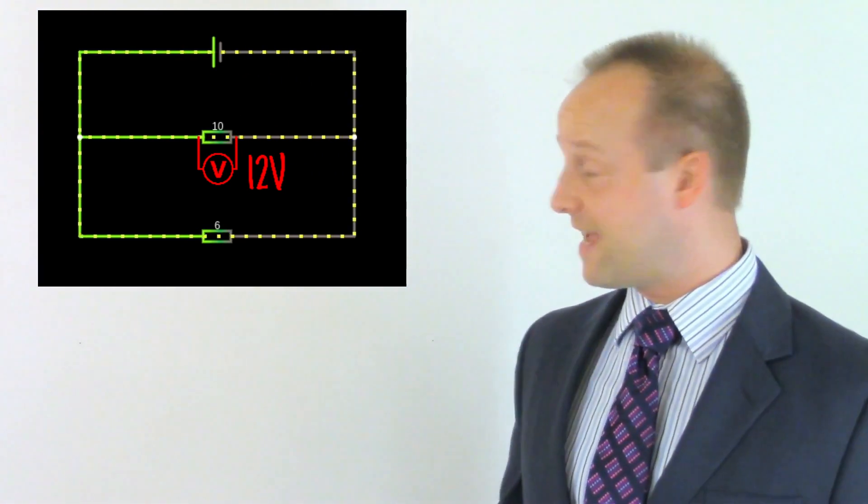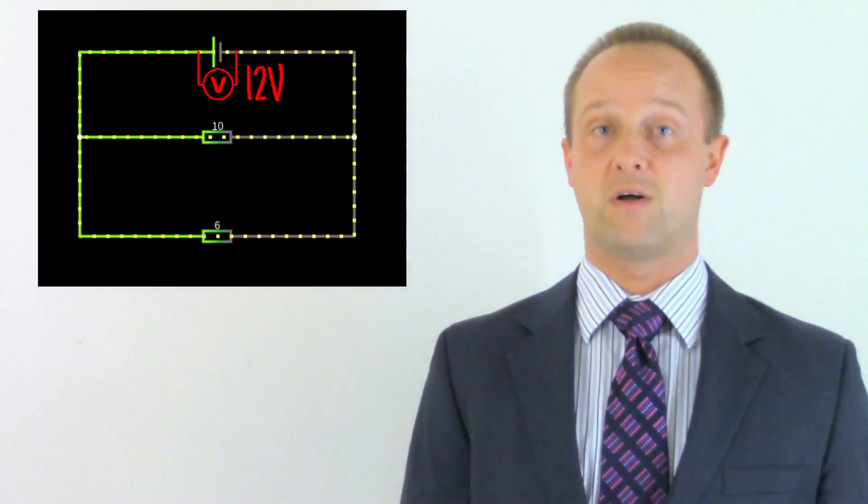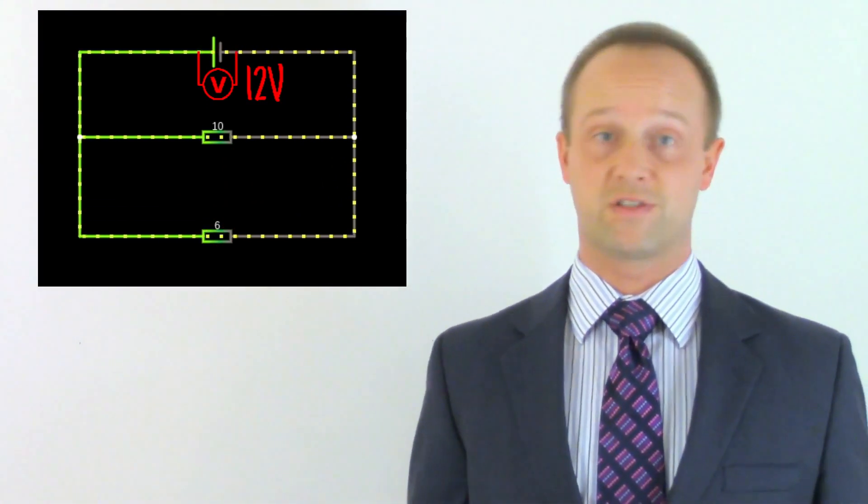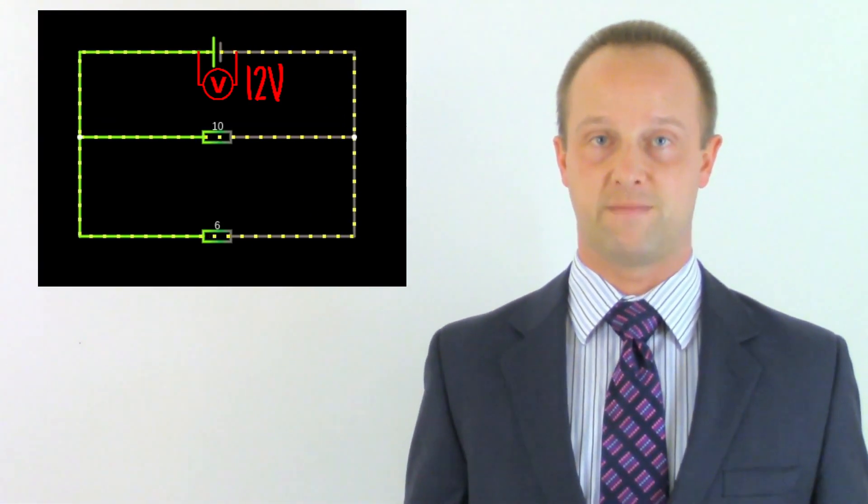Connecting a voltmeter here, or here, or here, is just connecting that voltmeter between 12 volts and 0 volts. So we're going to get a potential difference of 12 volts each time.